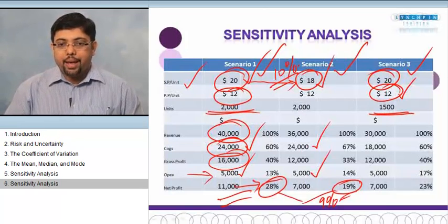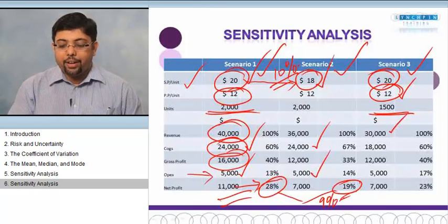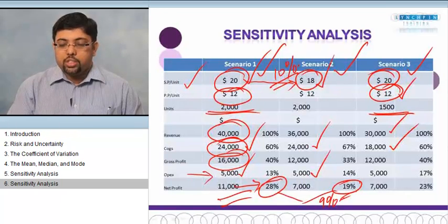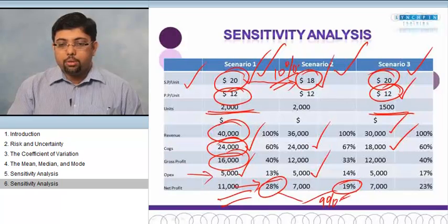What has happened is it is having an effect directly on the sales and the COGS. The revenue is going down from $40,000 to $30,000, from scenario one to scenario three.